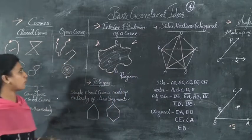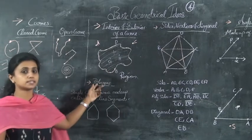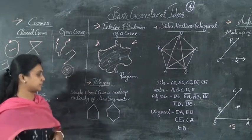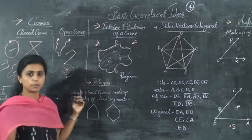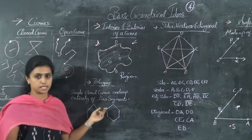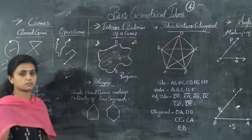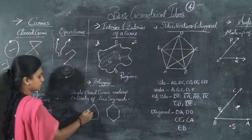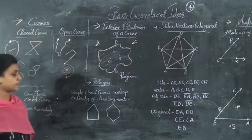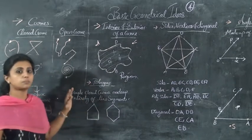Next one is polygons. Polygons are simple closed curves made up entirely of line segments. Polygons have 3 or more sides. So pentagon, hexagon — these are examples of polygons.